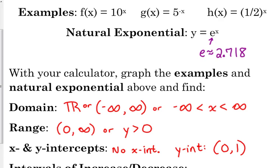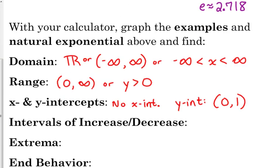So the negative exponent and the fraction were decreasing. That's for their entire domain, which was negative infinity to infinity. And 5 to the negative x and one half to the x were decreasing.